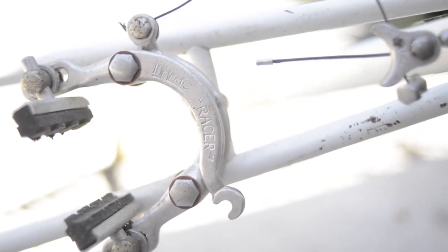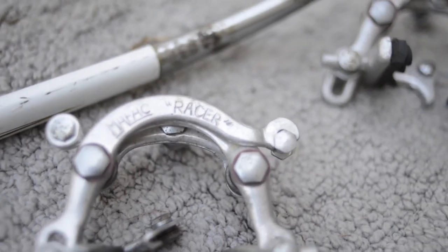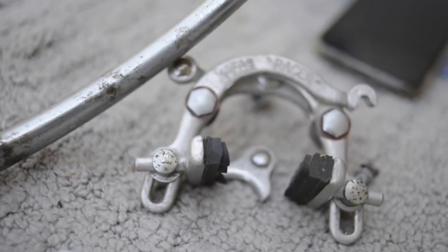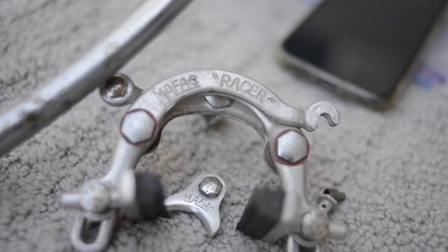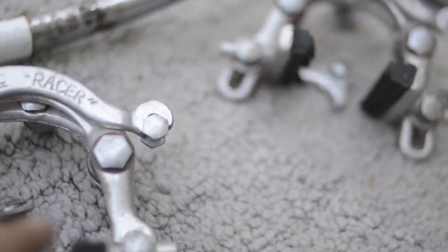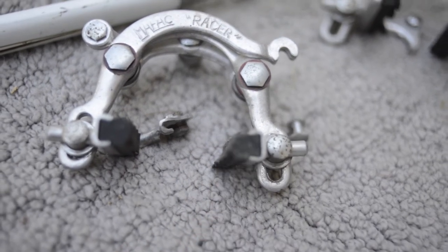All right. So here we are. The rear MAFAC racer brake and the front MAFAC racer brake. Actually, pretty simple to take off. Just snip the brake cables and just swap them. Going to have to replace the pads right here.